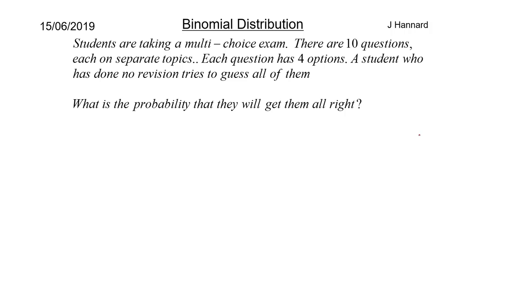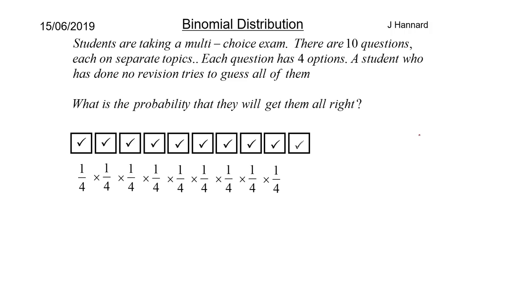So let's do an example then. Students are taking a multi-choice exam. There are ten questions each on separate topics. Each question has four options. A student who has done no revision tries to guess all of them. What is the probability that they get them all right? So we've got a little box here, there's ten questions, each question has four options. So they want to get them all right. Each time they get it right it's a quarter because you've got a quarter of a chance of getting it right. So every time you get it right it is going to be a quarter which equals one over four to the ten.